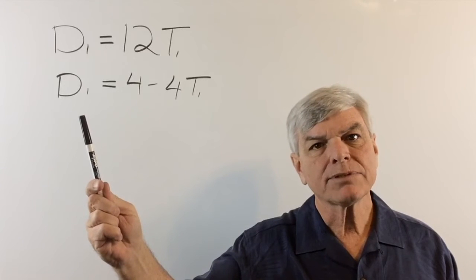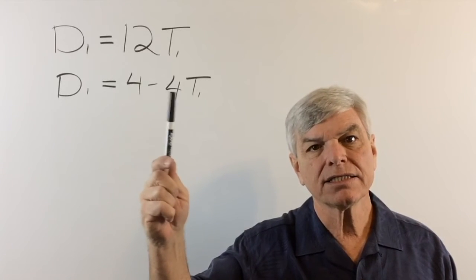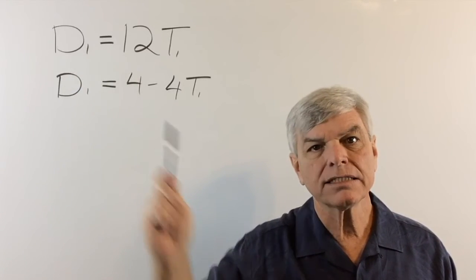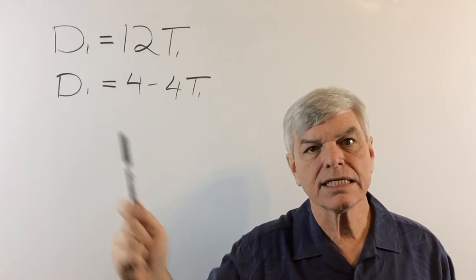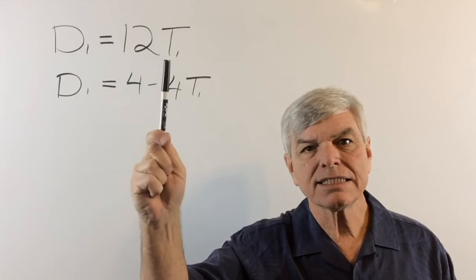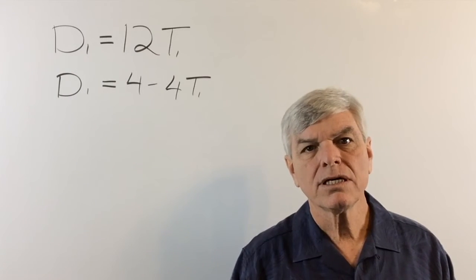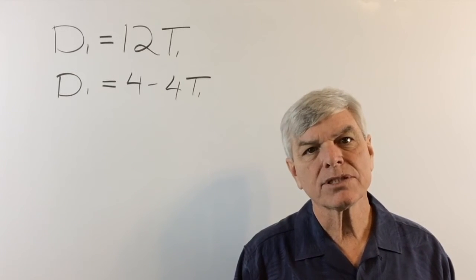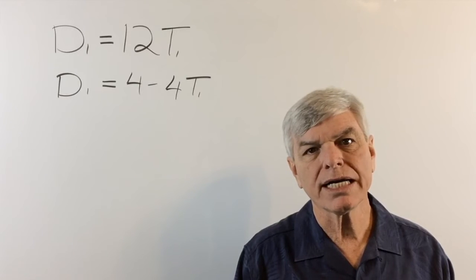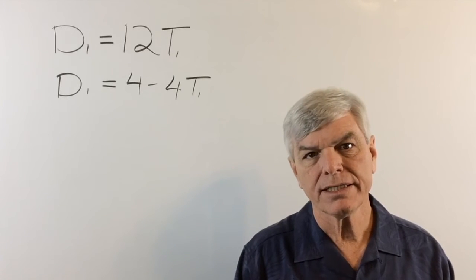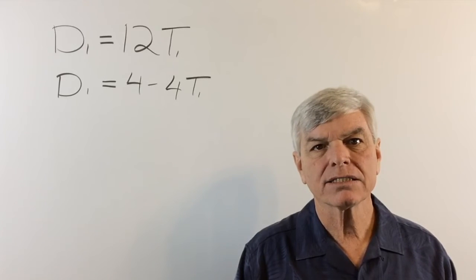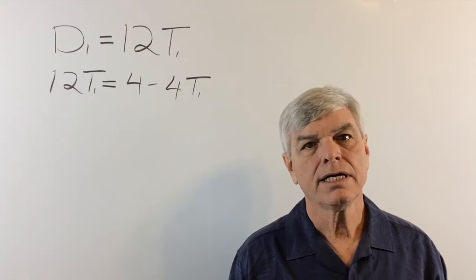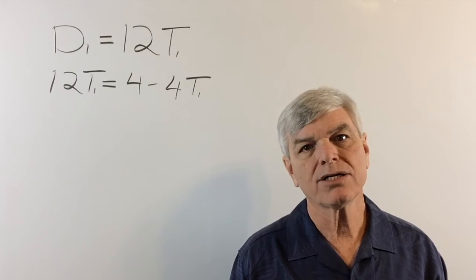So we can substitute this into this, or we can substitute this into this. And since this is a little bit simpler, why don't we substitute the 12T1 into the second formula. Now you can do it either way. It doesn't matter. But that looks the simplest to me. There we go. And again we are down to one variable.